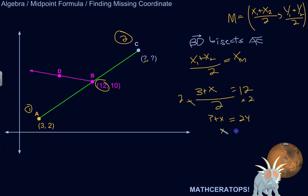Therefore, x equals 21. I subtracted that 3 invisibly. So let's start writing up the coordinates for C. 21 is the x-coordinate. Now let's find the y-coordinate using the same idea.